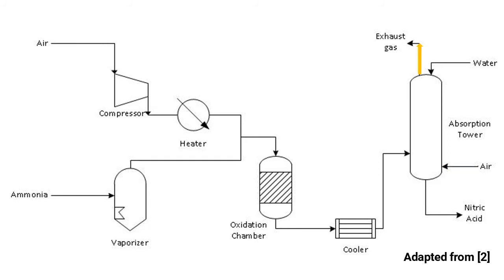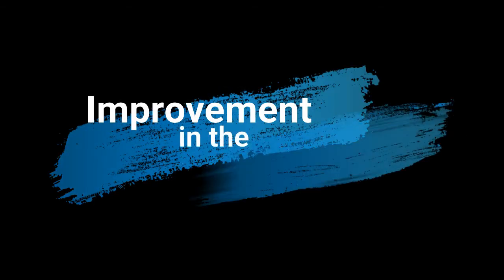Air is introduced at the base of the tower to bleach the acid by desorbing the dissolved nitrogen dioxide. The exhaust gases are still under pressure and may be used to supply power before being discharged to the atmosphere.